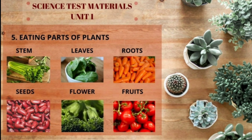Let's continue to discuss the fifth material for your test: eating parts of plants. Let me review a little bit. Stem — for example, celery. Leaves — for example, spinach. Roots — for example, carrots. Seeds — for example, red beans. Flower — for example, broccoli. And fruits — for example, tomatoes. But you can find other examples of parts of plants that we can eat too.